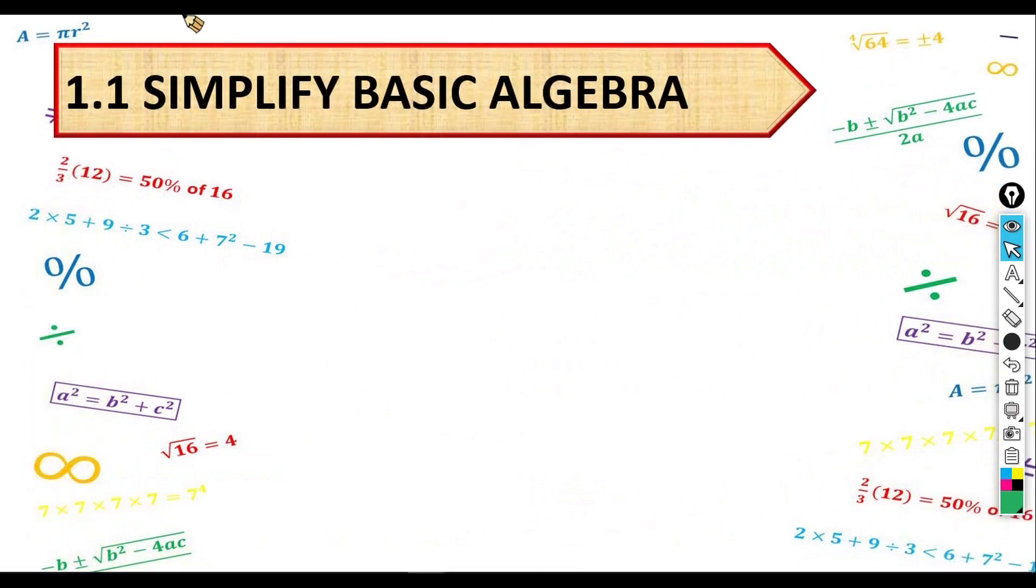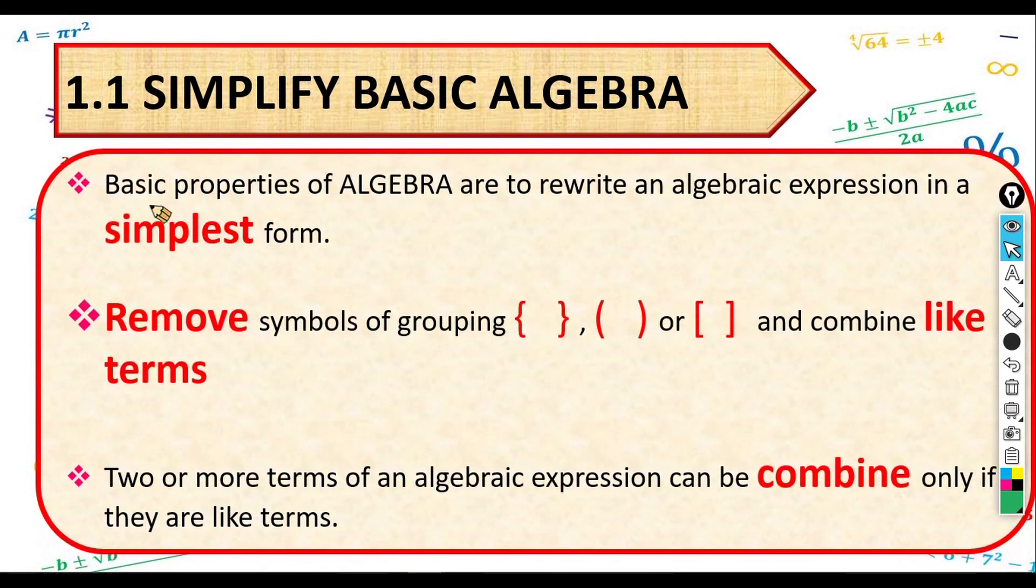Let's look at this 1.1 Simplified Basic Algebra. Basic properties of Algebra are to rewrite an algebra Expression in a Simplest Form. You have to remove the symbols of grouping, all the brackets, and combine the like Terms. Then two or more Terms of an algebra Expression can be Combined only if there are Like Terms.